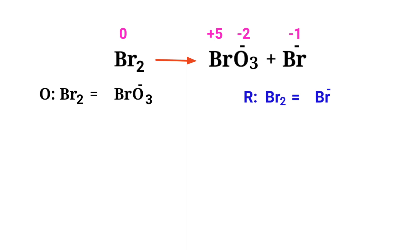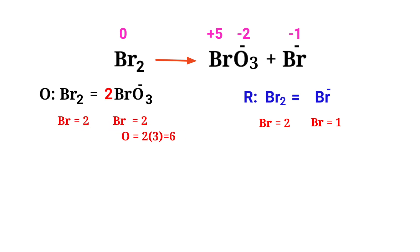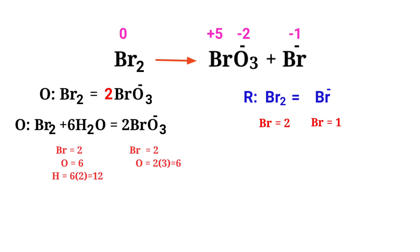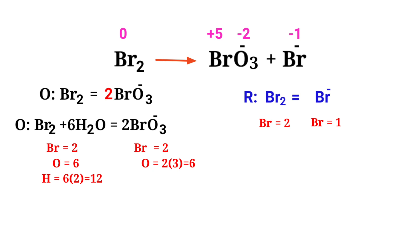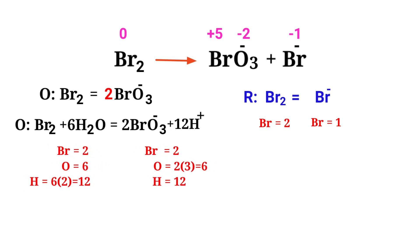Now you can balance the number of atoms in the two half reactions. In the oxidation half reaction, to balance the Bromine atoms, we need to put a coefficient of 2 in front of BrO3⁻. The Bromine atoms are balanced. Now we need to balance the Oxygen atoms. To do this, you can produce water molecules and H⁺ ions. Now the number of atoms are balanced in the oxidation half reaction.